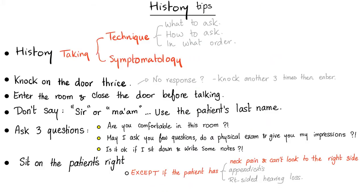History tips. History taking involves technique and symptomatology. Technique means how to ask the patient, what to ask the patient, and in what order. In your exam, how do you do it correctly?